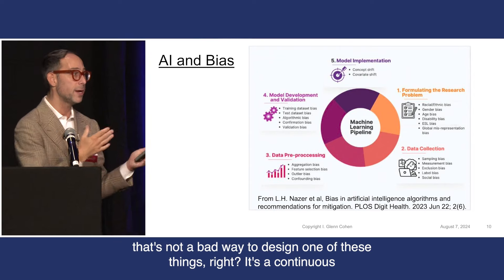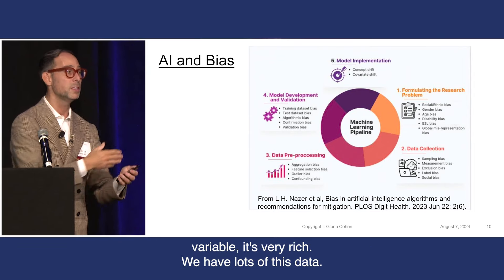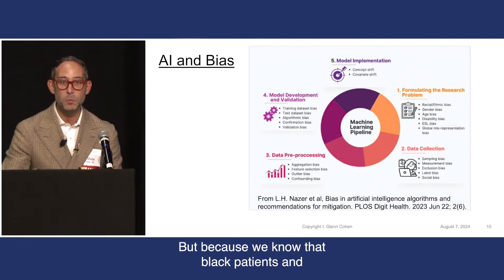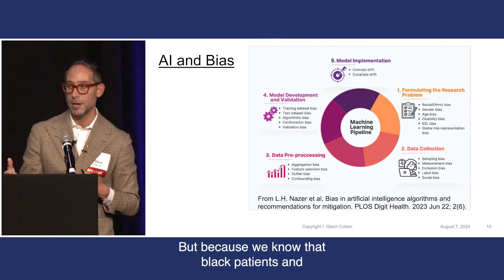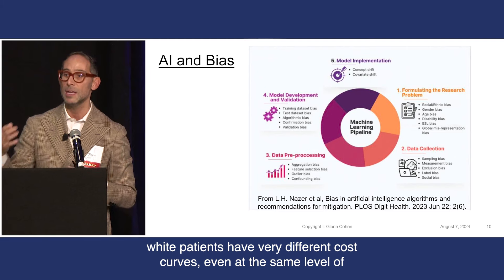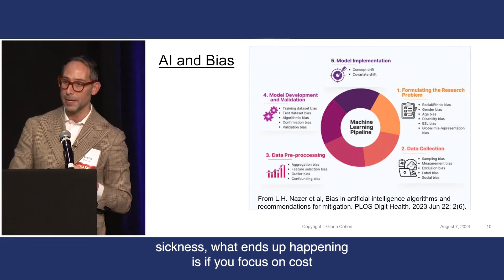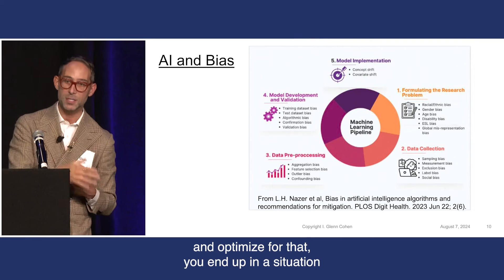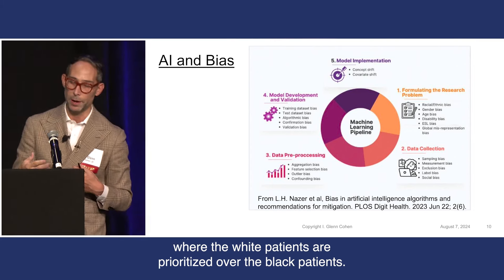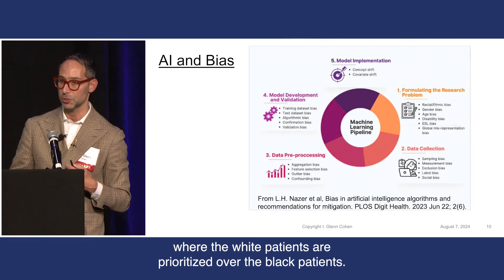They took total health expenditure or costs as the predictor of health needs. A priori, that's not a bad way to design one of these things — it's a continuous variable, it's very rich, we have lots of this data. But because we know that black patients and white patients have very different cost curves, even at the same level of sickness, if you focus on cost and optimize for that, you end up in a situation where white patients are prioritized over black patients.